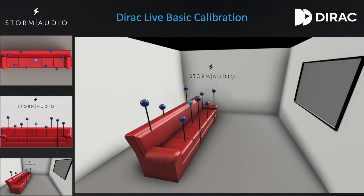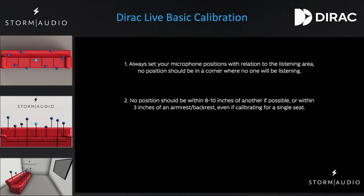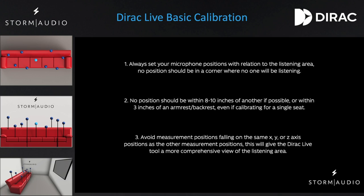This is intended to be used as a guideline, and your room may require you to modify these positions to fit your needs. Here are the guidelines to follow: 1. Always set your microphone positions with relation to the listening area — no position should be in a corner where no one will be listening. 2. No position should be within 8 to 10 inches of another if possible, or within 3 inches of an armrest or backrest, even if calibrating for a single seat. 3. Avoid measurement positions falling on the same X, Y, or Z axis positions as the other measurement positions, to give the Dirac Live tool a more comprehensive view of the listening area.